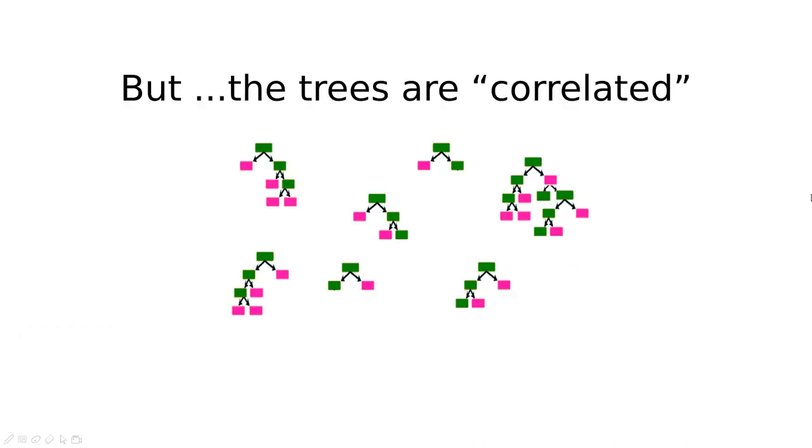There is one problem here - the trees are highly correlated because you're basically shuffling your data, but you're playing with the same data over and over again. Is there an improvement? And the answer is yes, of course, this is a rhetorical question. The answer is random forest.